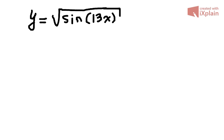Let's look at it layer by layer. Right inside, it's usually easier to find the inner function — and there it is, the angle of that sine. So this is the most inner function, a linear function 13x. The next layer outside will be sine of that 13x, a trigonometric function.